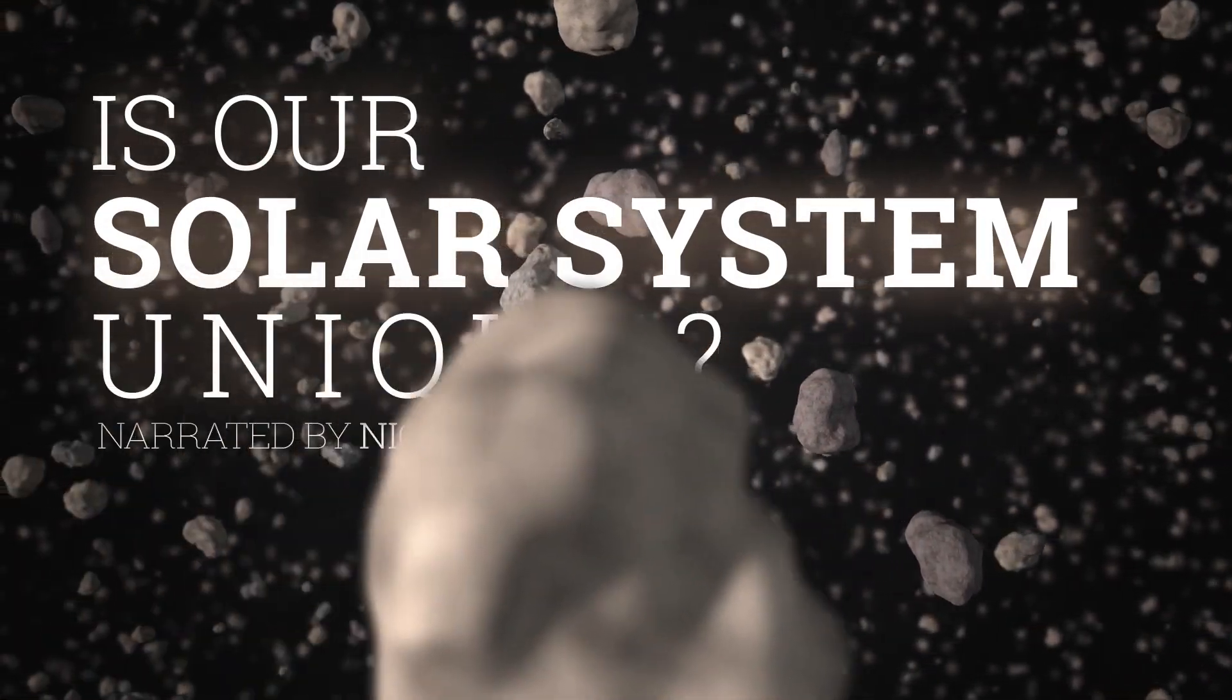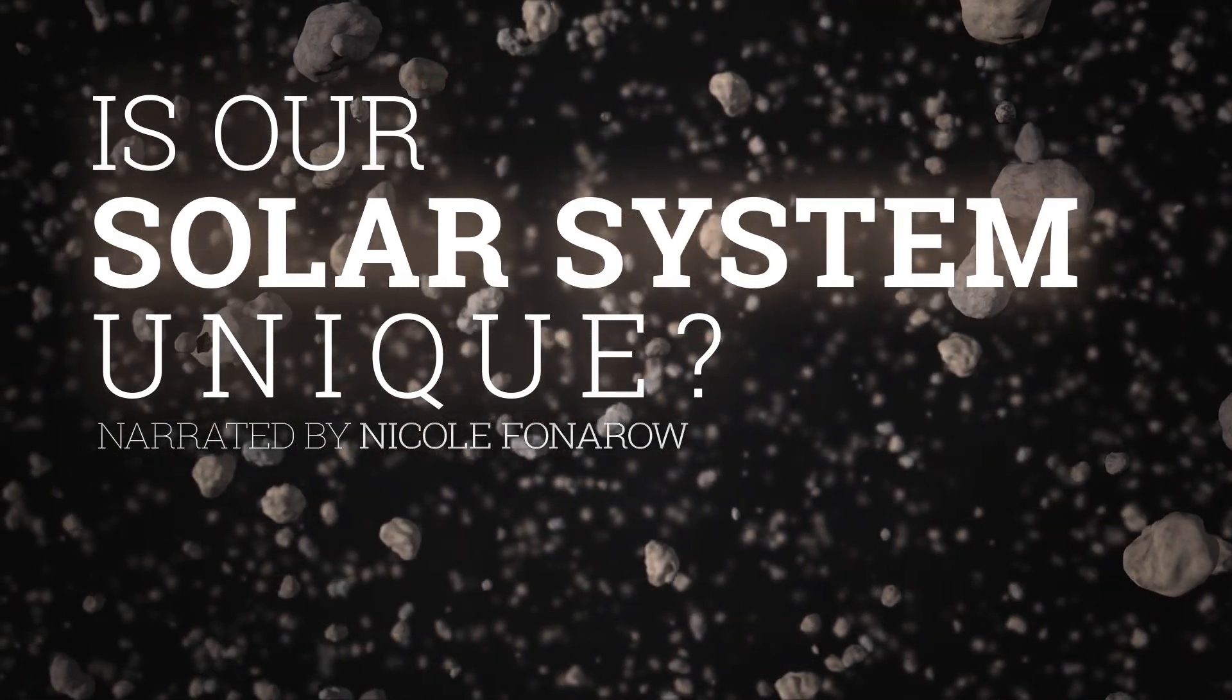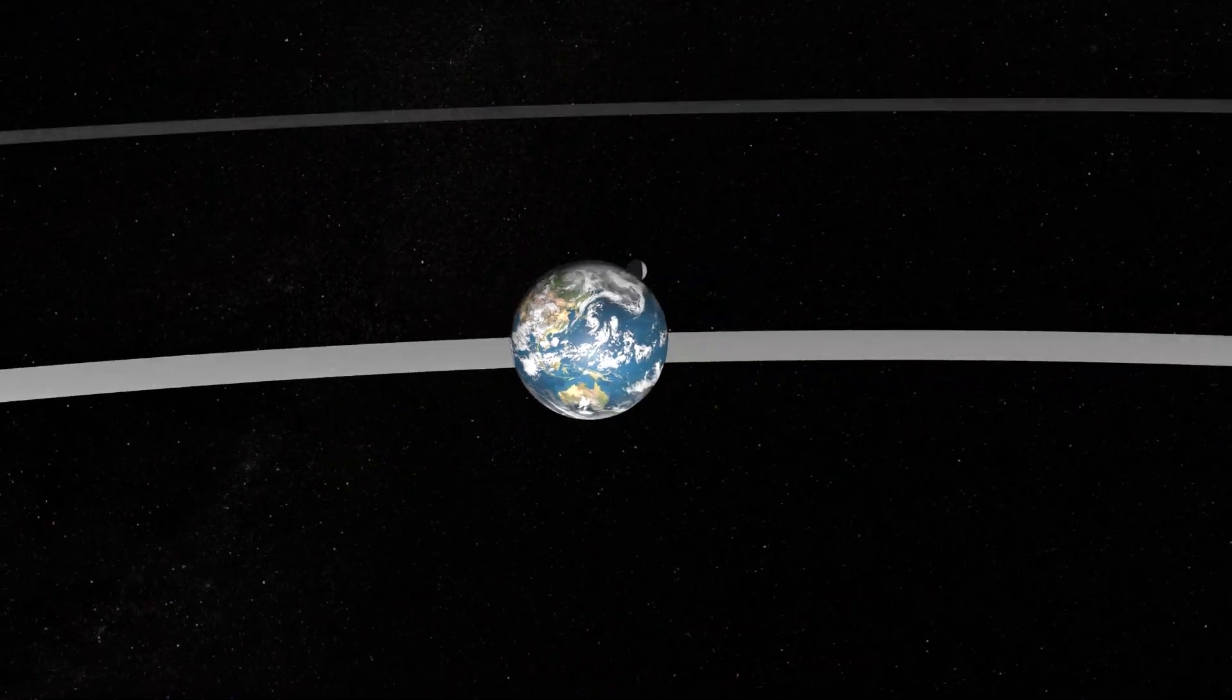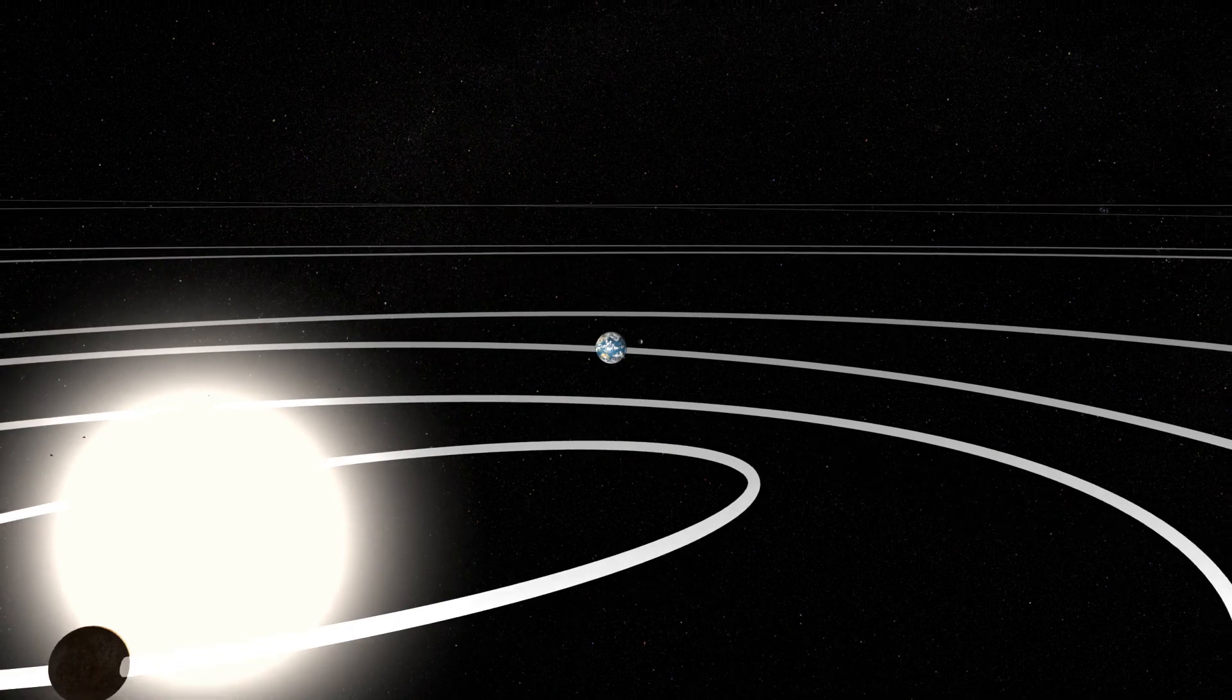Is our solar system unique? Here we are, on the small, water-covered, rocky planet, orbiting a medium-sized yellow star.